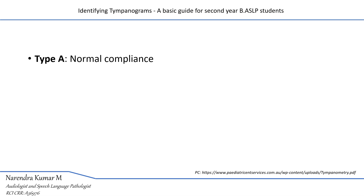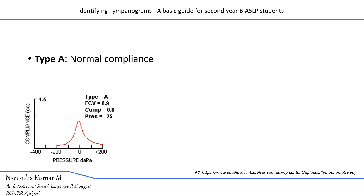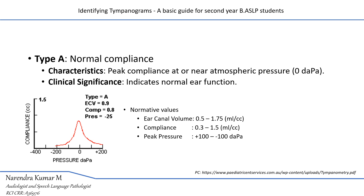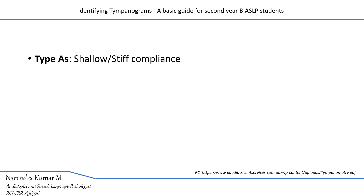Type A tympanogram indicates that tympanic membrane compliance is normal with normal middle ear pressure. It is characterized by normal ear canal volume and normal compliance of the tympanic membrane. The peak of the tympanogram falls between minus 100 to plus 100 decapascals, and compliance varies between 0.3 milliliters to 1.5 milliliters. This is what a normal type A tympanogram looks like in the figure.